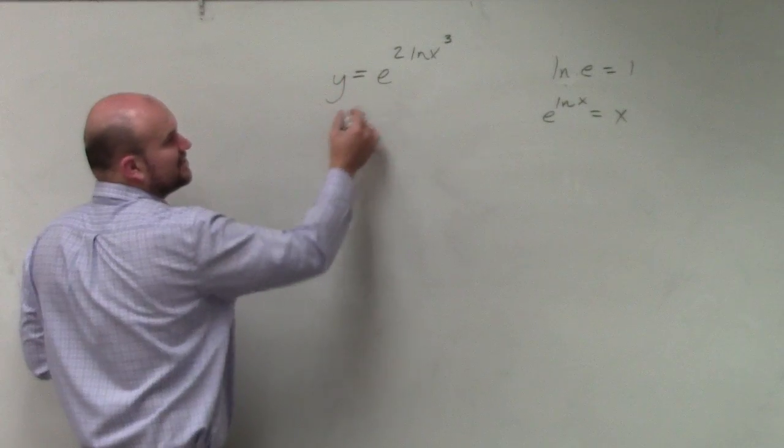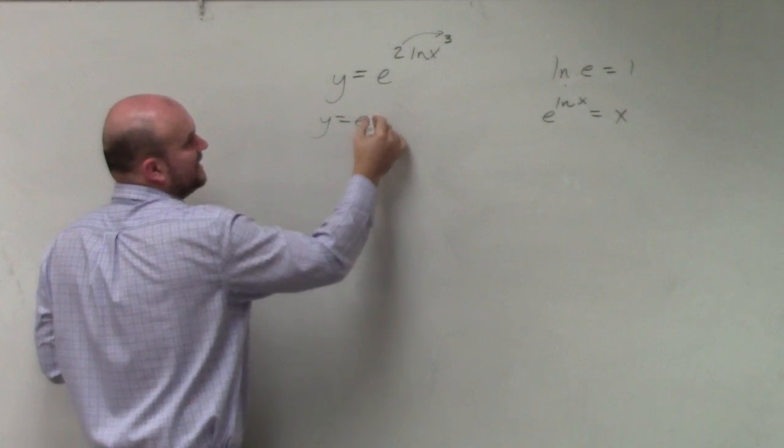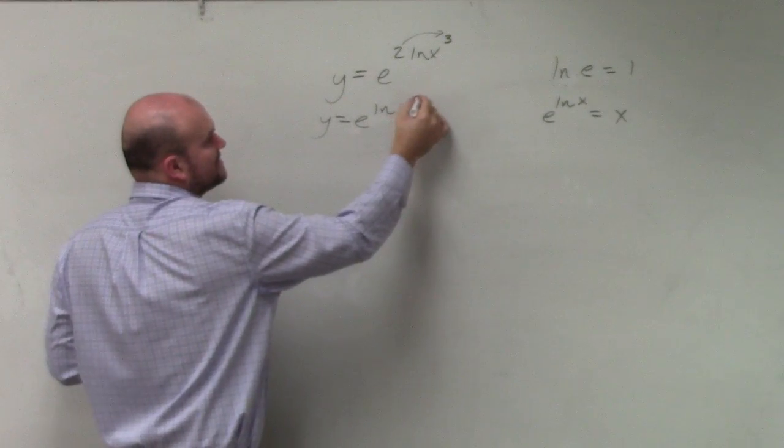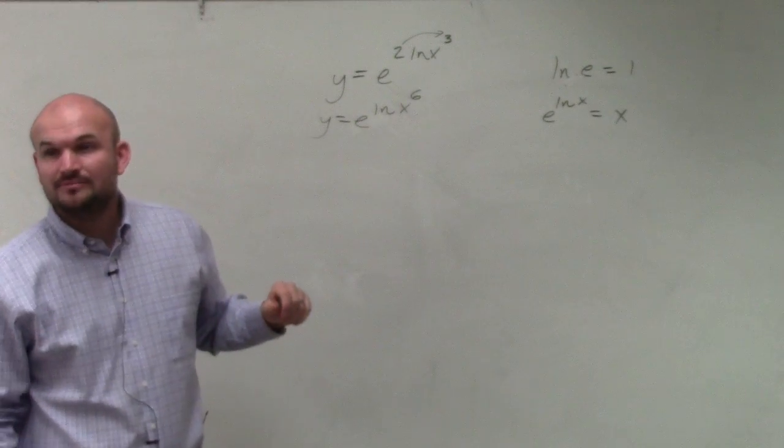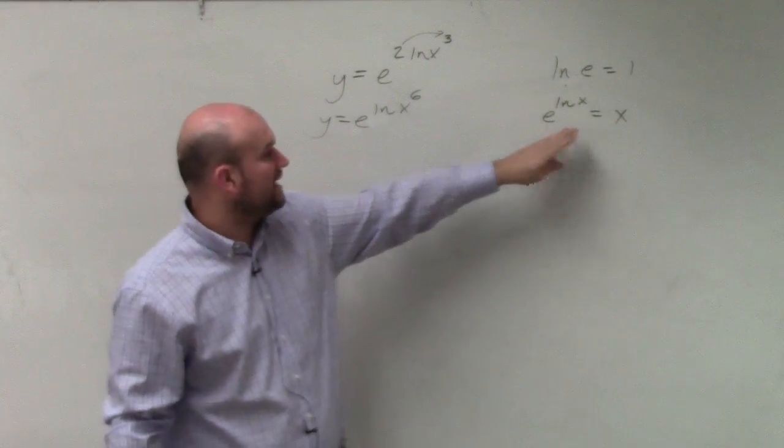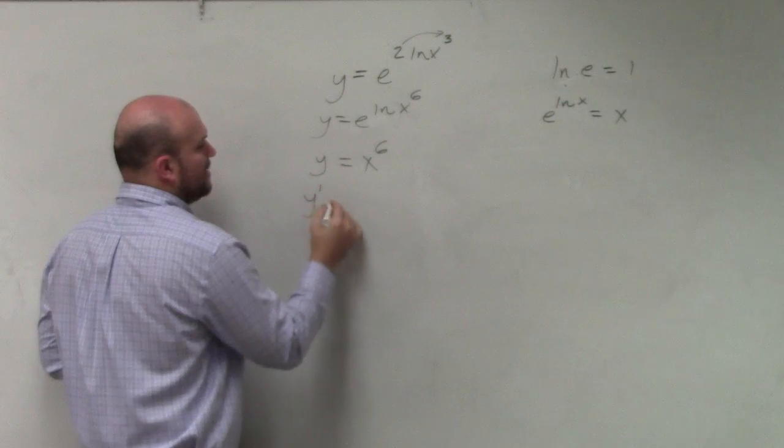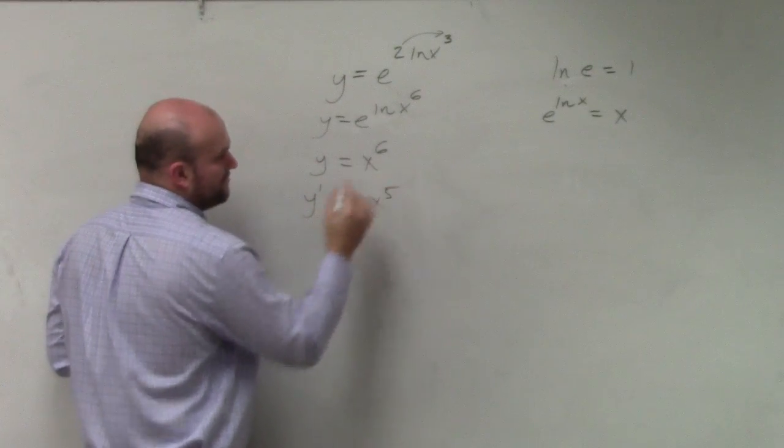So in this case, I can bring this 2 up top to rewrite this as e to the ln of x to the sixth power. Now, I can just apply this to simplify this to y equals x to the sixth. So y prime equals 6x to the fifth power.